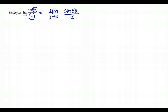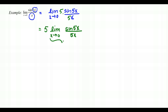We rewrite the expression: sin(5x)/x becomes sin(5x)/(5x), but to balance multiplying the denominator by 5 we also multiply the numerator by 5 — which is like multiplying by 5/5, i.e., by 1. By the constant limit law we pull the 5 to the outside: 5 times the limit as x approaches 0 of sin(5x)/(5x).